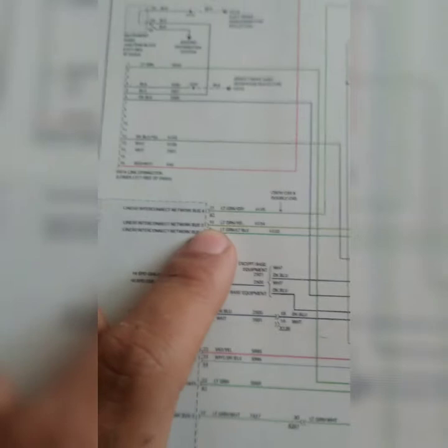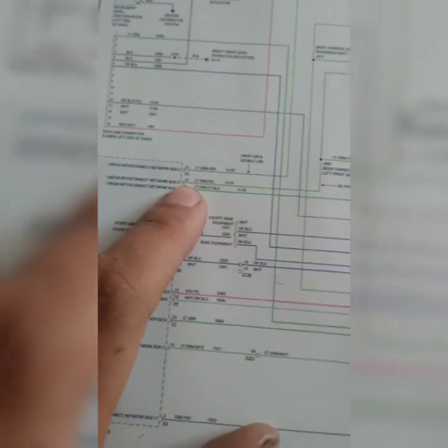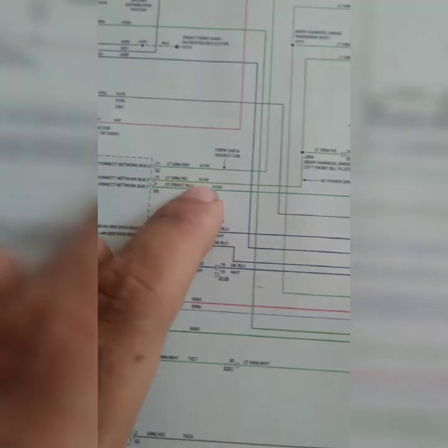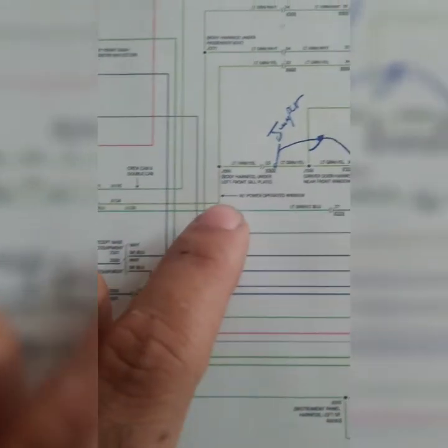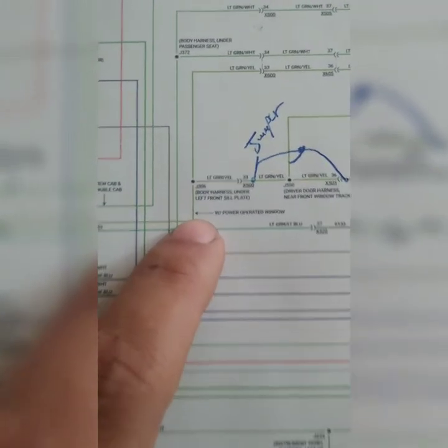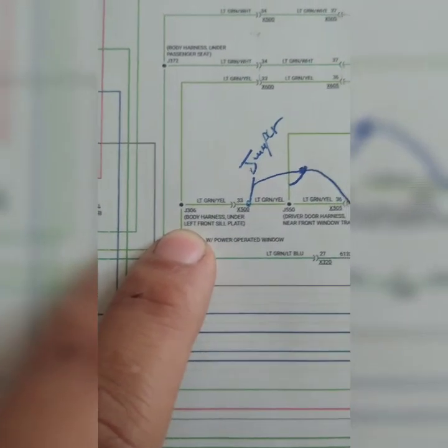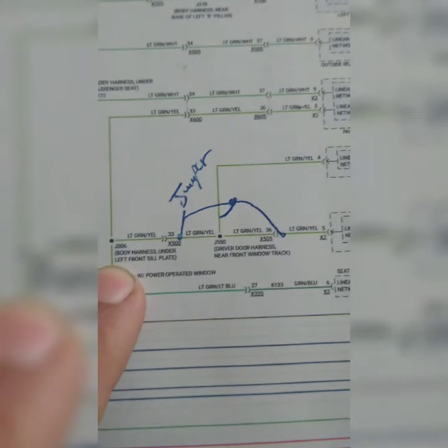So this guy interconnects everybody that has to do with the power window system. You got your buttons there, you got your motors, you got everything just to one wire. It's a joke, but yeah, just to one wire. So when you follow this wire, like green yellow, you keep on going. Boom, body harness on the left front seal plate. And this is where my jumper was made.